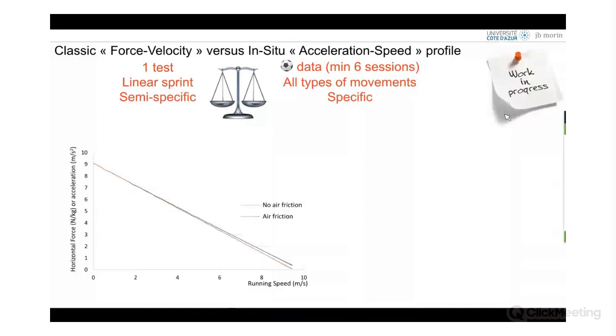So here, just the computation: why do we say force-velocity and acceleration-speed? Just because to know the maximum force, you need to quantify the air friction. And it's pretty easy during a single test, and it's not easy at all during two weeks of football. So this is why we use a₀.